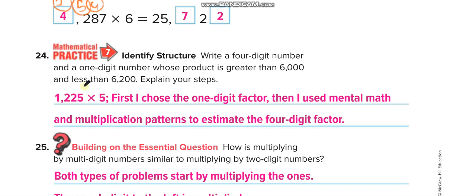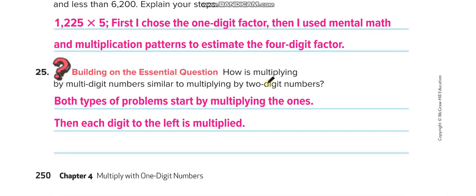Write a 4-digit number and a 1-digit number whose product is greater than 6,000 and less than 6,200. So here I give you one example, guys. You have to give me another example for this question in the comment box.